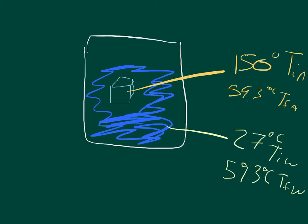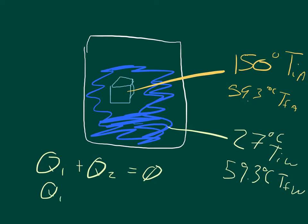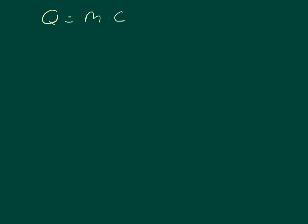For this problem, we need to use our transfer of energy equation. The transfer of energy by heat by one object plus the transfer of energy by heat by another object — if these are the only objects in our system — the net is going to equal zero. So the transfer of heat by one object equals the negative of the transfer of heat by the other object. We can use our definition for Q: Q equals mass times specific heat times change in temperature.